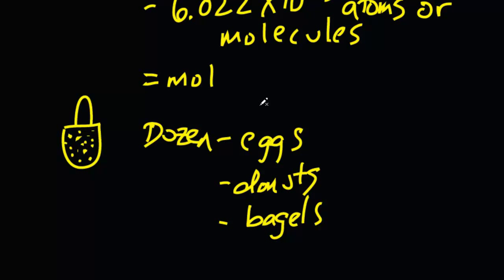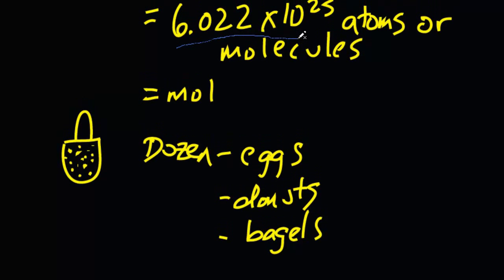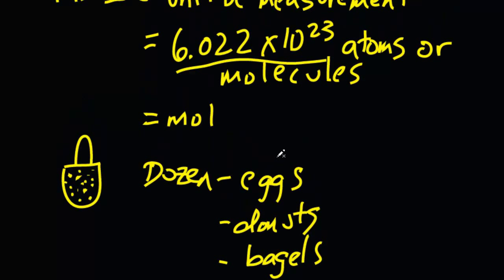One more thing. The reason why we use mole is because if we were to use this quantity all the time, it would just be really difficult to write. So it's a shorthand basically, so you don't get carpal tunnel syndrome. That's why we use mole.